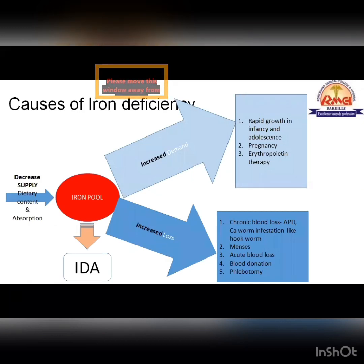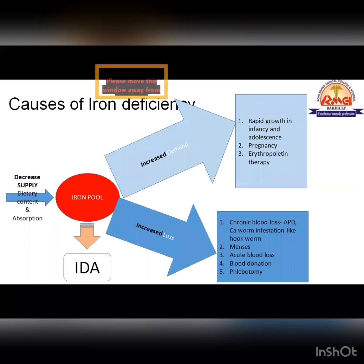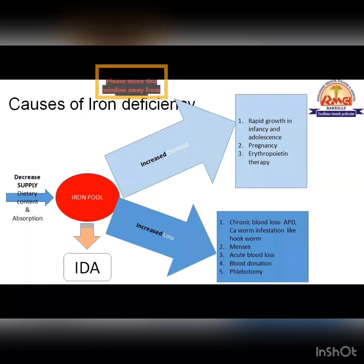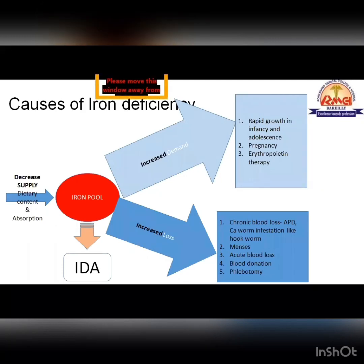Increased loss may be due to acute or chronic blood loss. In acute blood loss like trauma, blood is lost along with iron — every 1 ml of packed RBCs contains 1 mg of iron. Chronic blood loss is the most common cause of anemia; it may be due to carcinoma or peptic acid disease. In tropical countries, worm infestation — especially hookworm in children — is very common. In females, menstrual bleeding is a major cause, with around 80 ml of blood lost in a single cycle.